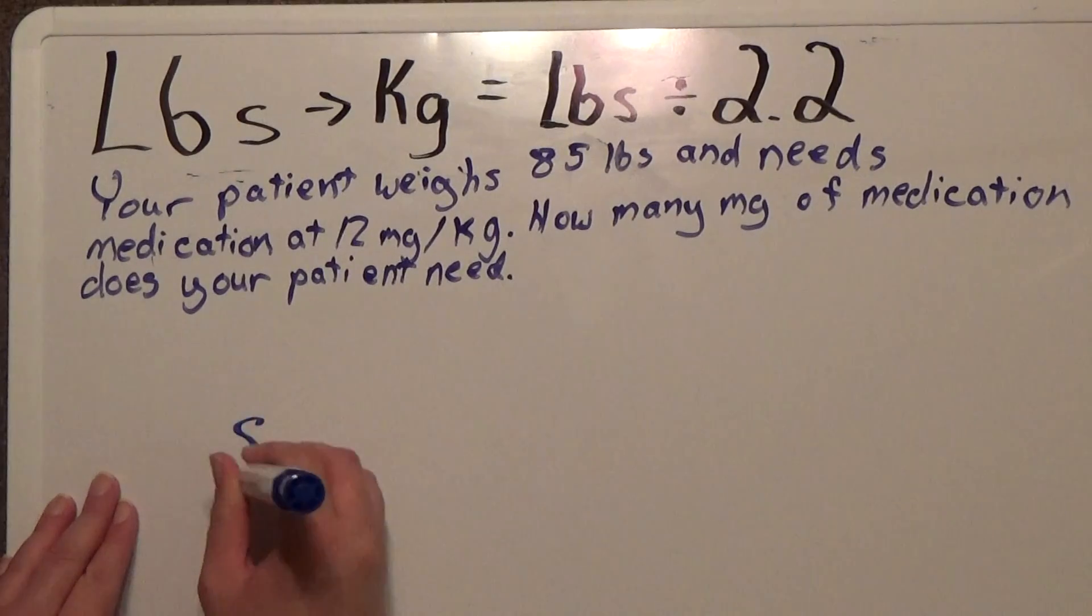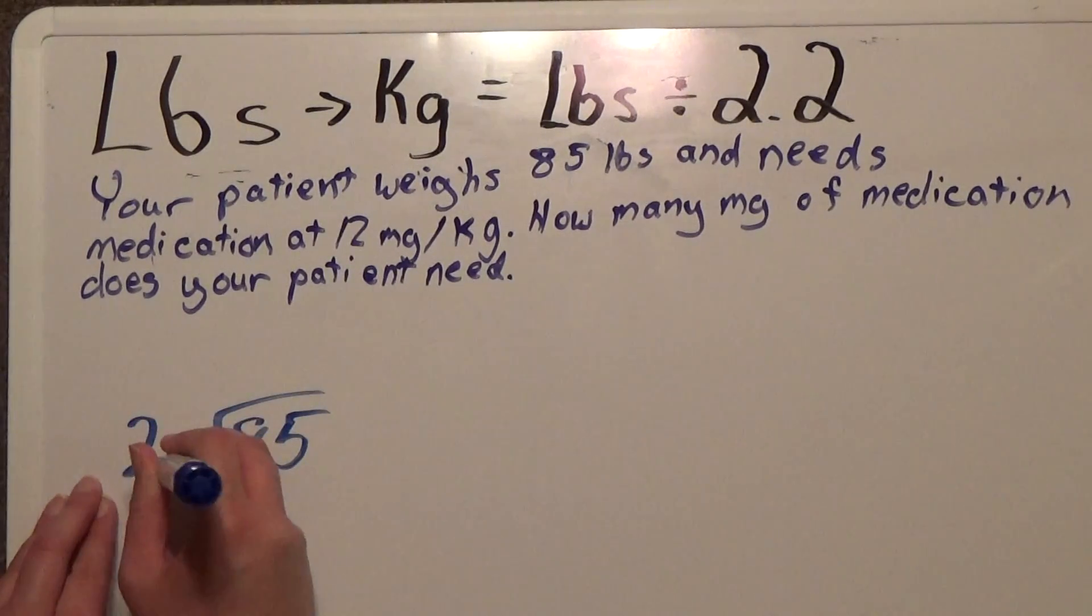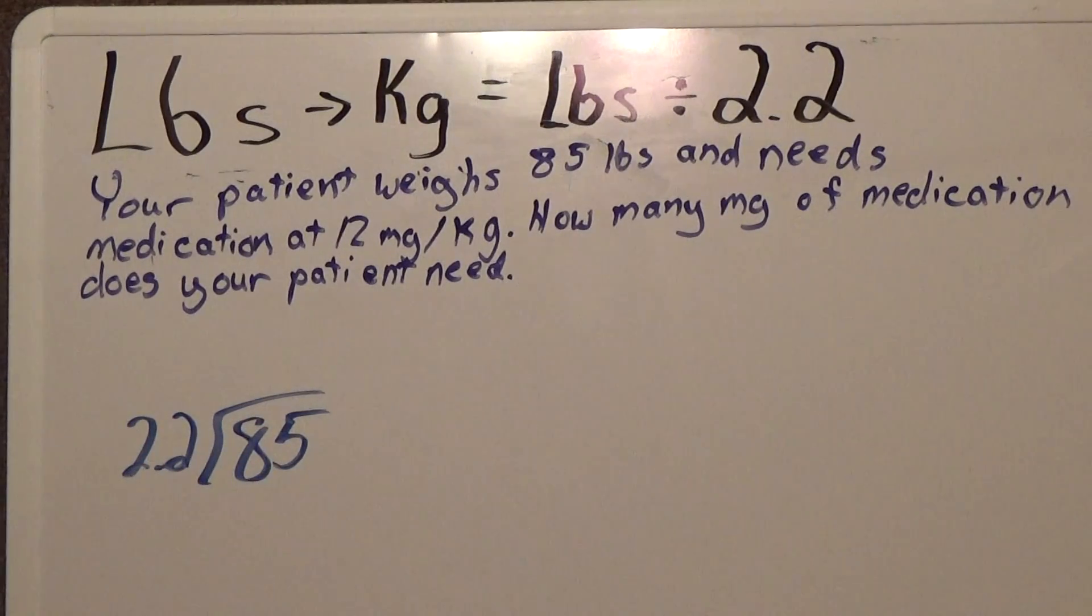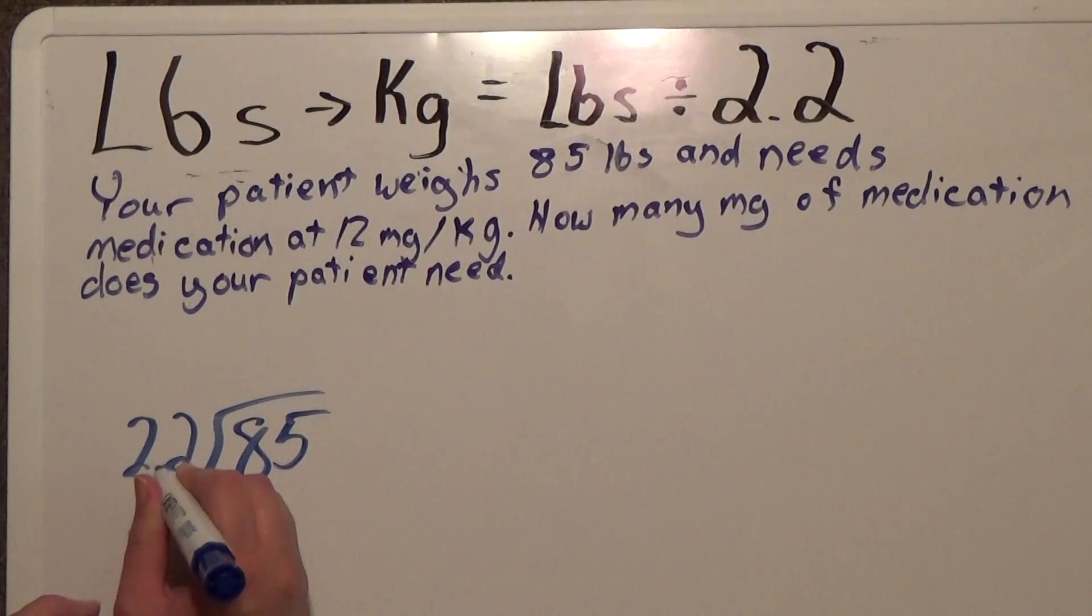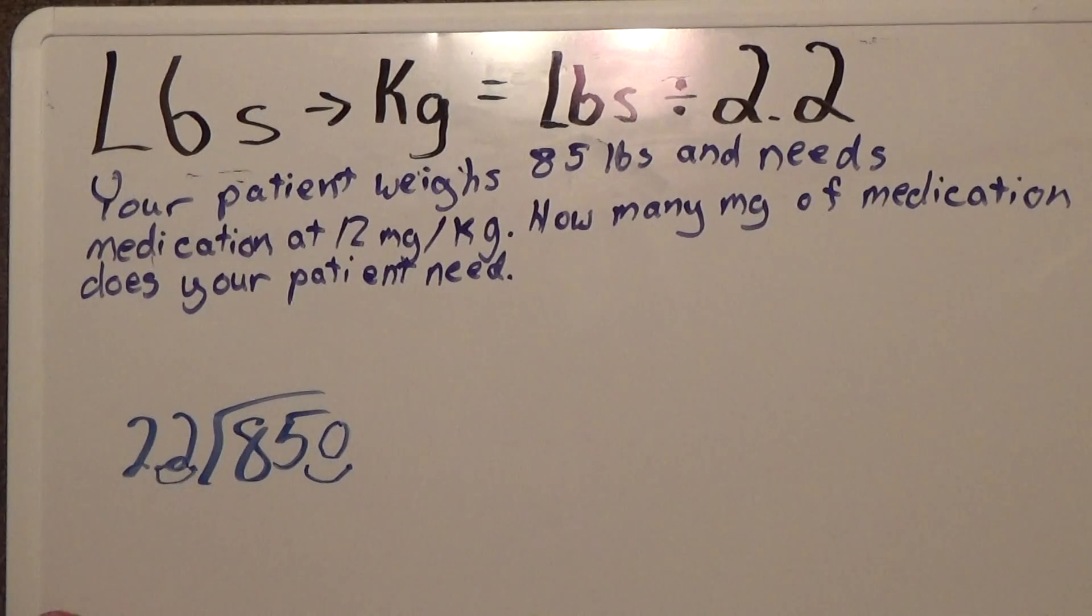So what we're going to do is take 85 divided by 2.2. I'm going to do this on a calculator, however, if you're doing it longhand, what you want to do is move the decimal point one place to the right on the left side and then one place to the right on the right side, so you would end up dividing 850 by 22.